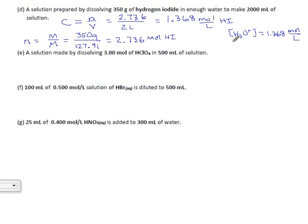And if they want the hydroxide, I'll shortcut this because you've seen it a few times. 1 times 10 to the minus 14 divided by 1.368, 7.31 times 10 to the minus 15 moles per liter OH.